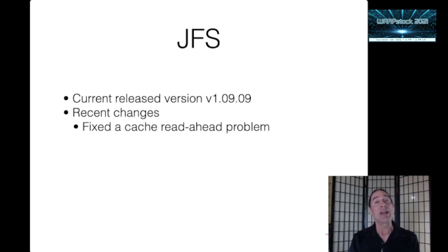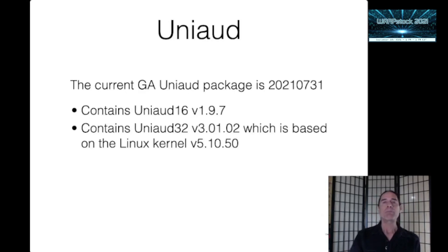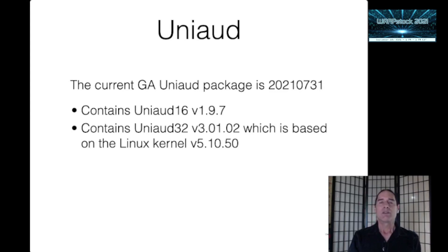JFS had an update — the current version is 1.09.09. I fixed a cache read-ahead problem in the IFS driver itself. An unusual sequence of opening and then accessing certain files could result in a hung file system; it's a bizarre combination but it's been fixed. UniAud got an update — the current GA package is dated 2021-07-31. It contains UniAud 16 version 1.9.7, the same one we've been using, plus an updated UniAud 32 version 3.01.02 based on Linux kernel version 5.10.50. Paul Smedley did all the porting work; I just built the distribution packages.